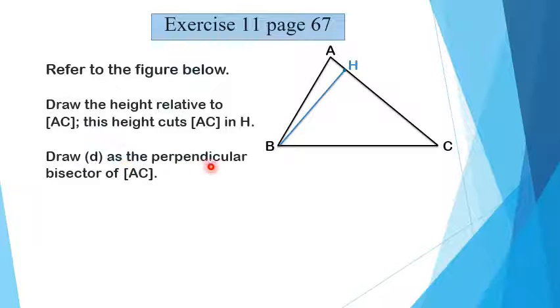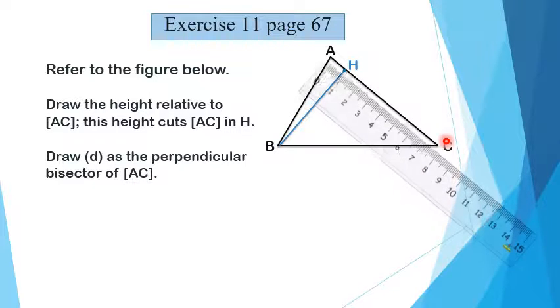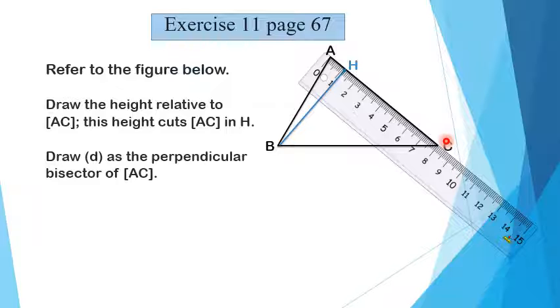Second part: draw D as the perpendicular bisector of AC. How can I draw the perpendicular bisector? Easy, either by using a compass or by plotting the midpoint and drawing the perpendicular passing through the midpoint. We have to draw perpendicular bisector of AC.